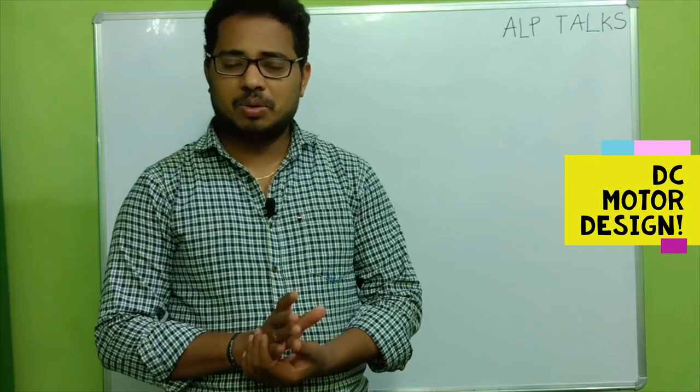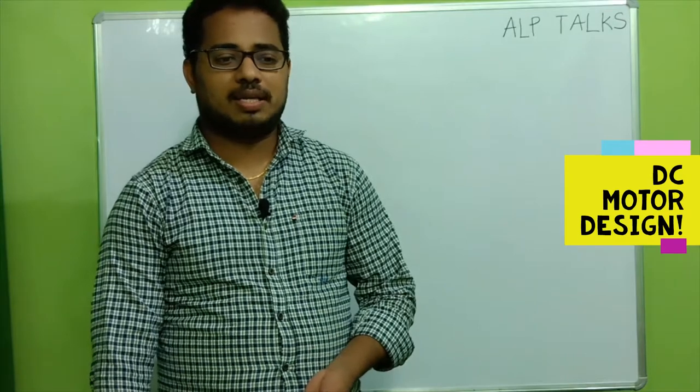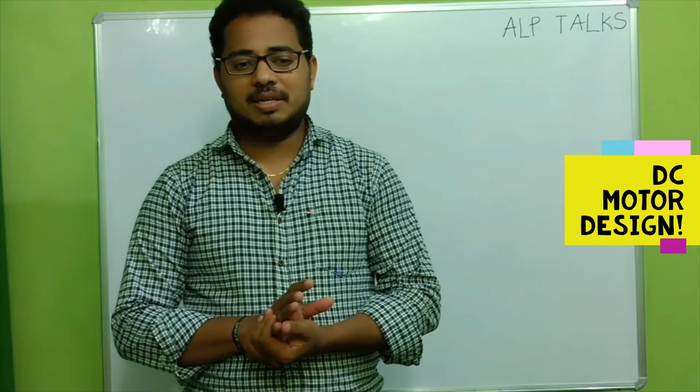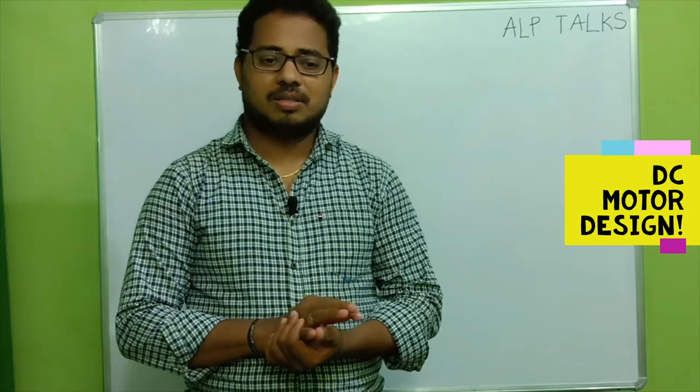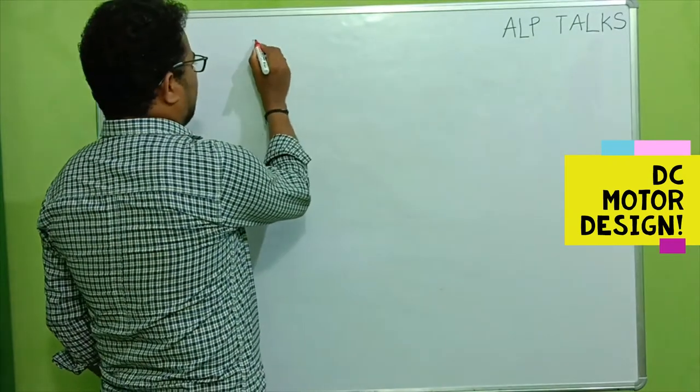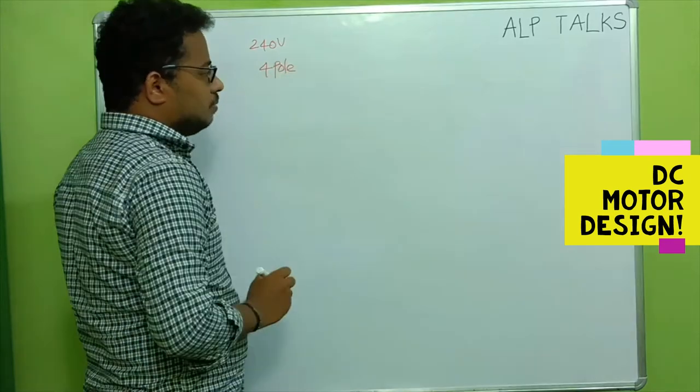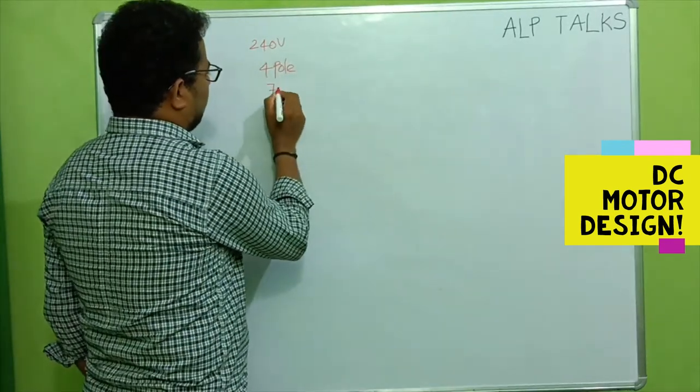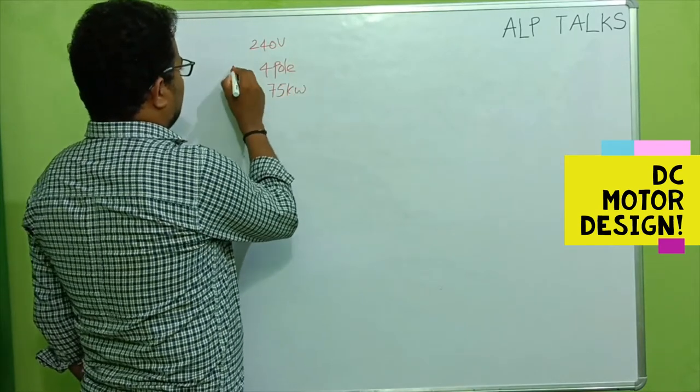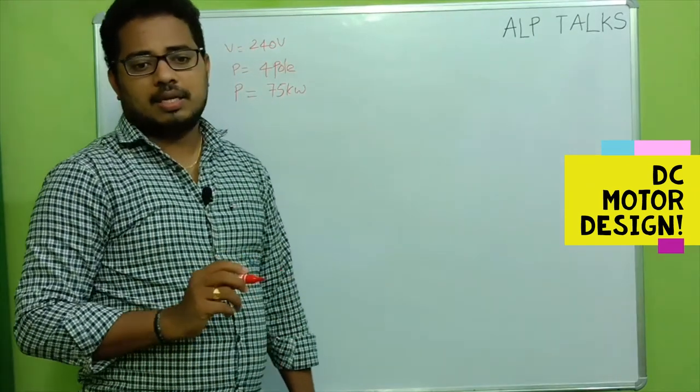The design problem is: design a separately excited industrial motor of 240 volts capacity, 4-pole, full, and this is of 75 kilowatt rating. This is the capacity, this is the number of poles, and this is the terminal voltage. Let us consider the rating is a continuous rating.